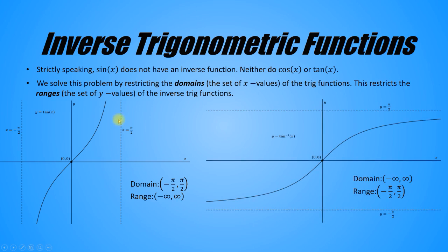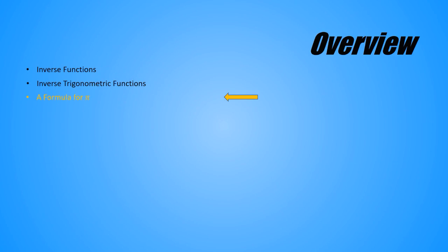And here's the inverse tangent function. Note how the vertical asymptotes of the tangent function become horizontal asymptotes of the inverse tangent function. In the first video, I told you that pi is approximately 3.14159, and that the decimal expansion continues forever without repeating. At the time of this recording, pi is known to about 31 trillion digits. How does one compute the digits of pi? In this segment, we're going to use an inverse trig function to start to answer that question.